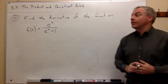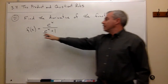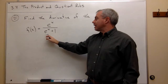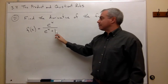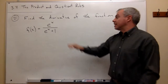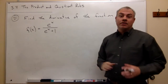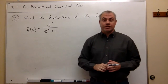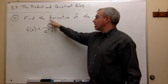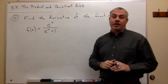In number 21, we want to find the derivative of the function f of x equals e to the x divided by e to the x plus 1. The very first thing we should see here is that this is the quotient of two functions — one function on top divided by another function on the bottom.